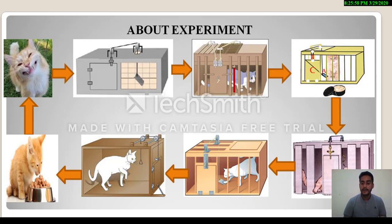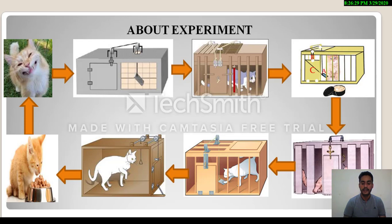In initial stages the cat performed many random activities and gave multiple responses to the stimulus. The food outside the cage was acting as a stimulus. In the fifth picture you can see the cat's paw on the lever. After many random and meaningless activities, accidentally the cat's paw lands on the lever, it opens the door and eats the food. Thorndike repeated this experiment multiple times per day — about ten times in the morning and ten times in the evening.